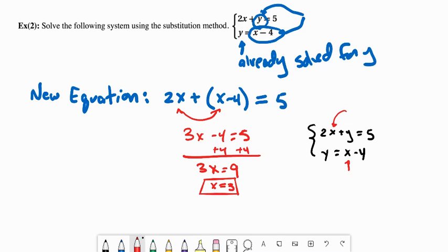So the top equation becomes 2 times 3 plus y equals 5. That is 6 plus y equals 5. Subtract 6 from both sides, and we get y equals negative 1.